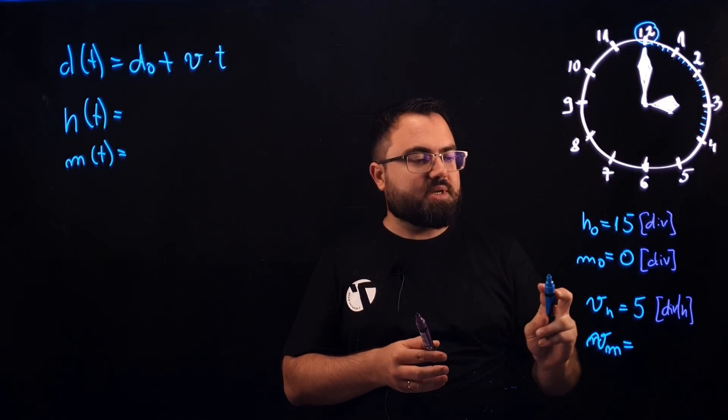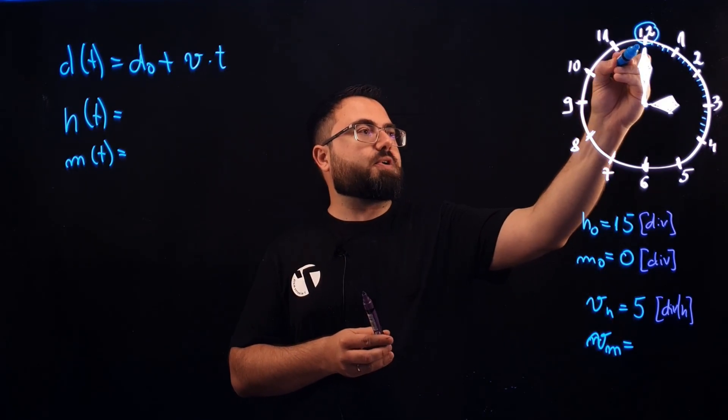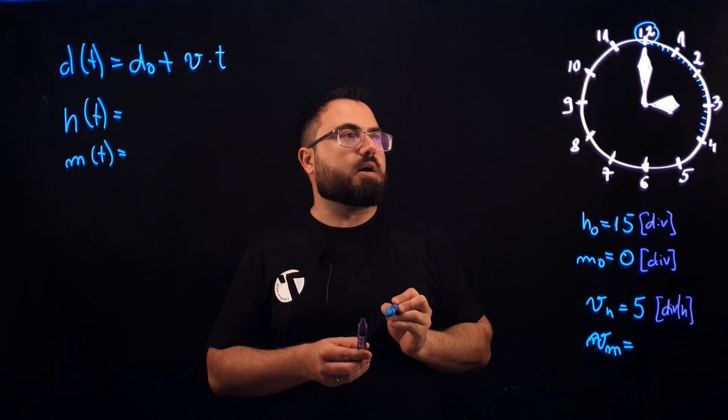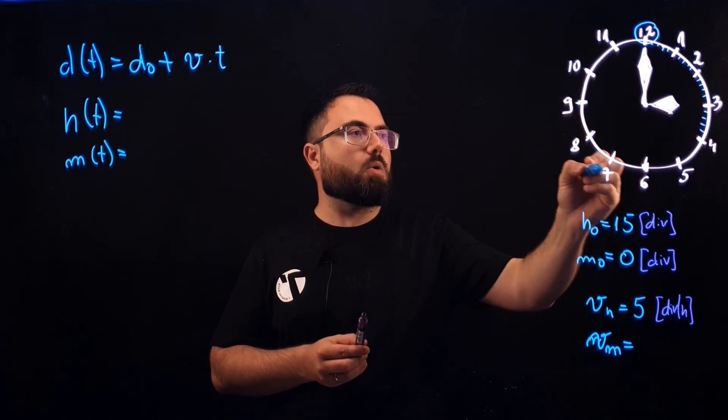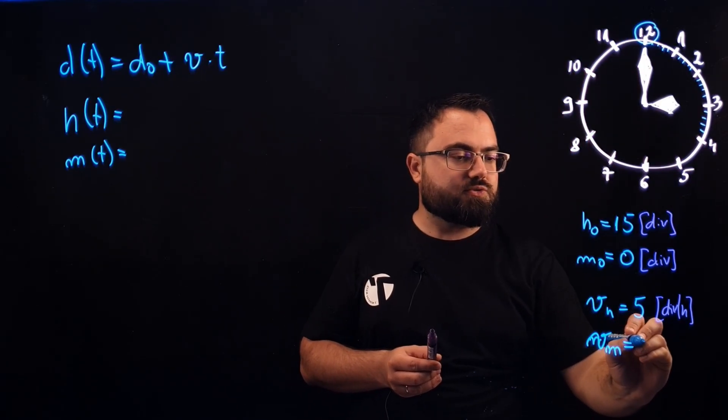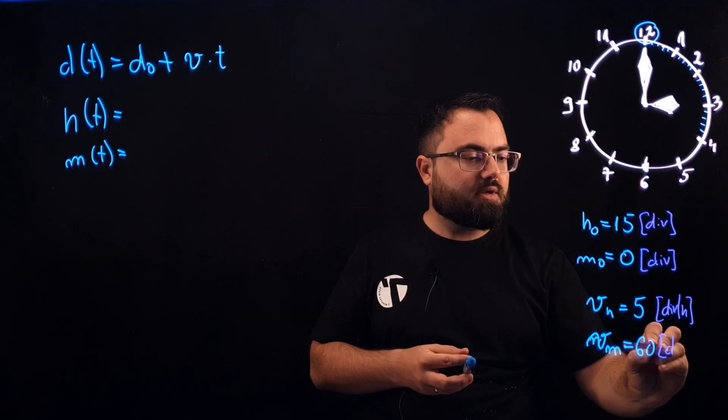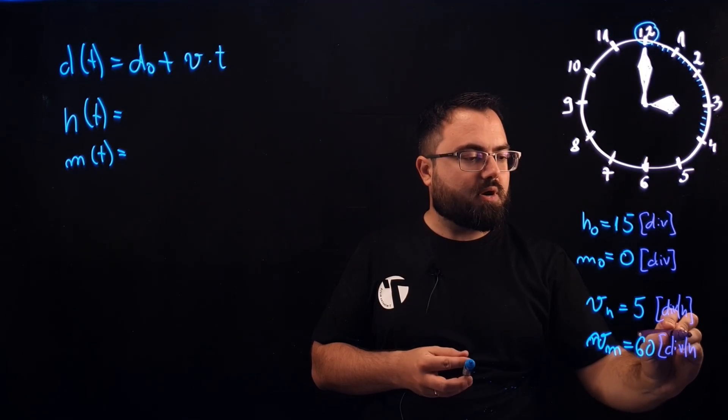And now for the speed of the minute hand, it will travel all the way from one end to another of the clock. It will make a round trip and that means all in all 60 divisions. And the unit here of course is division per hour.